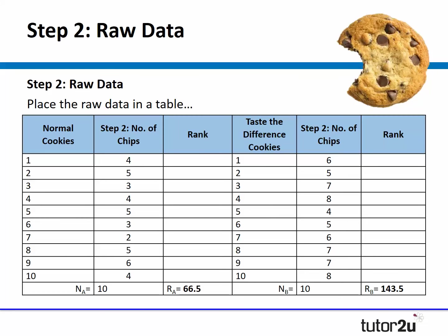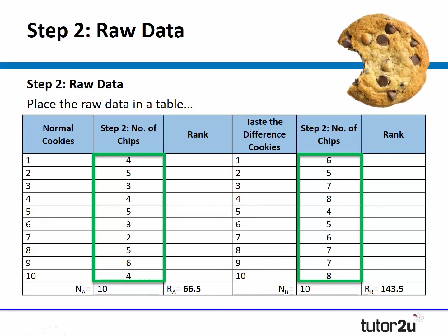To run the experiment, provide half the class with Taste the Difference cookies and half with standard chocolate chip cookies, and ask them to count the number of chips, plotting the data on a table. I've done this assuming 10 cookies from each pack, with made-up data for the purpose of this demonstration. That's step two: collecting the raw data.